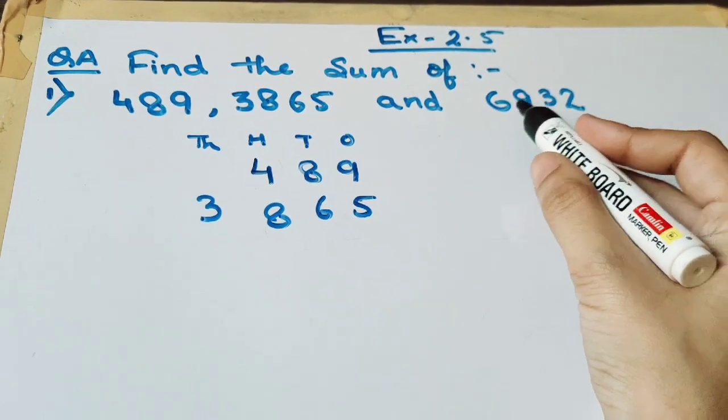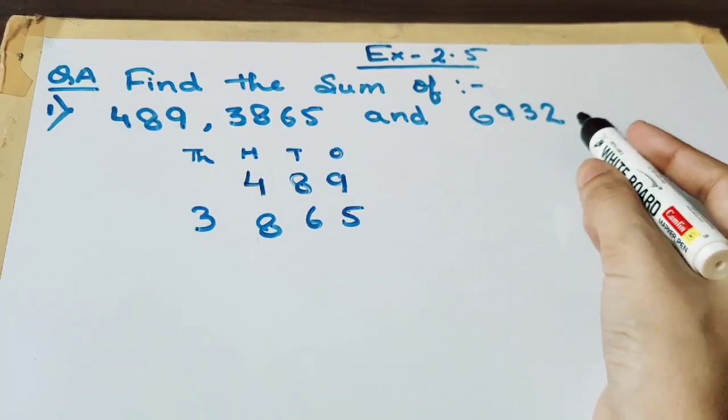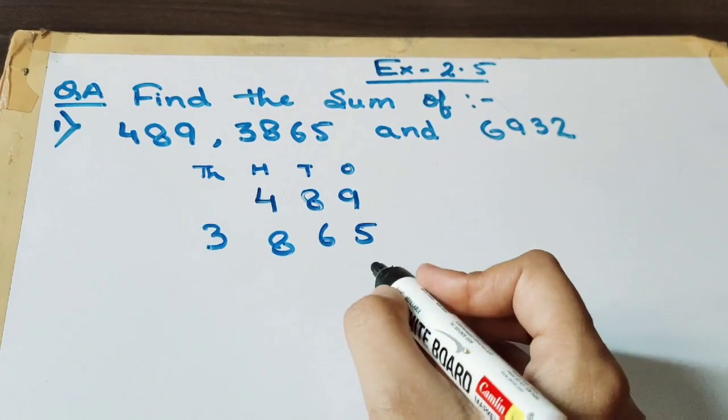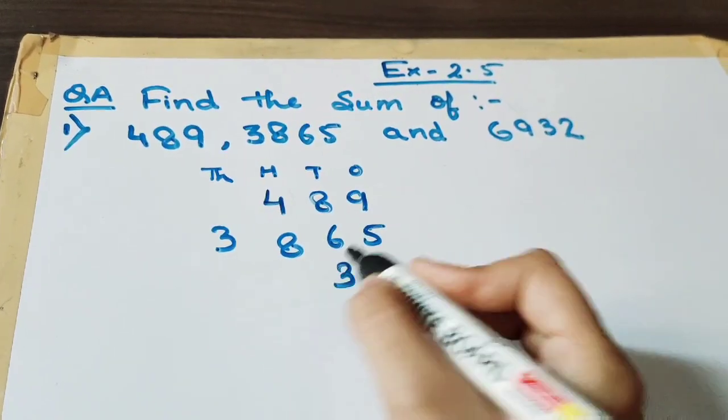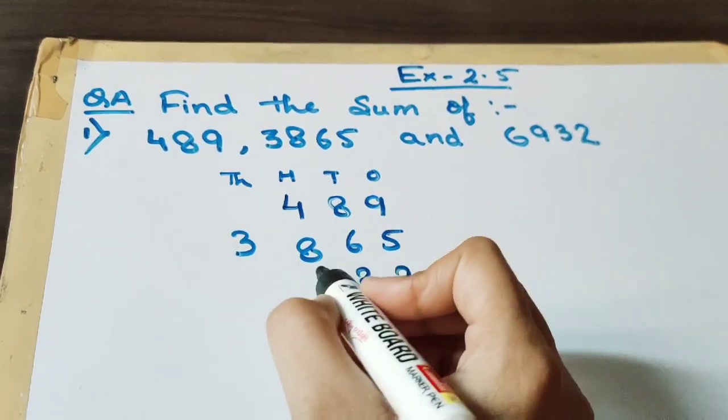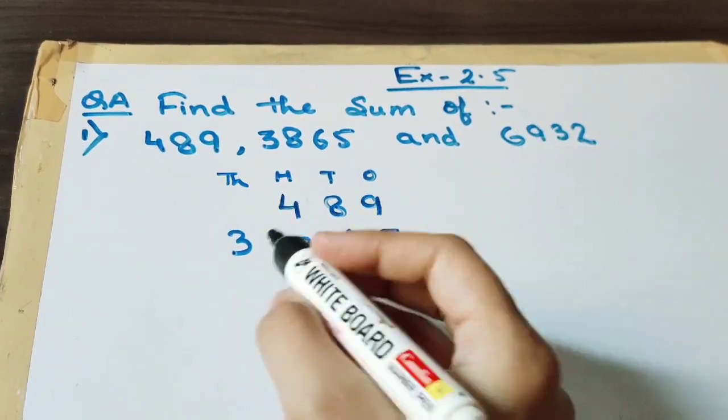Now the third number, 6932. 2 is at the 1's place so we will write here 2. Then 10's place 3 and 100's place 9 and 1000's place 6.